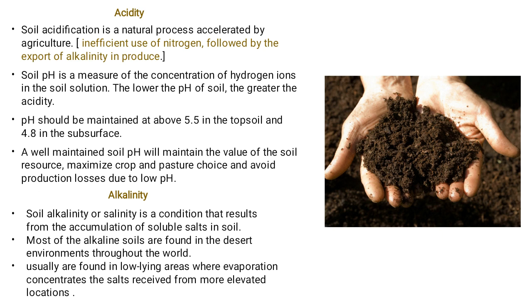Soil acidification is a natural process which is accelerated by agricultural activity. The inefficient use of nitrogen, as well as the export of alkalinity in produce (meaning cultivation), can result in more acidity in the soil. The alkaline contents may be absorbed by the plants, thereby leaving a higher concentration of acidity in the soil.